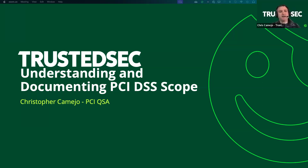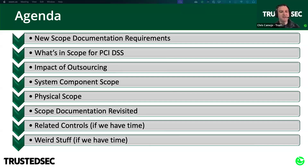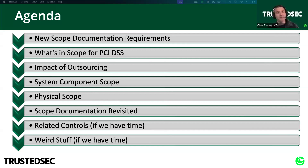Today we're going to talk about a new requirement in PCI 4.0 about documenting scope. There's the requirement itself, and then there's the deep dive into one of the big things we run into as QSAs: people who think they have their scope right, but don't actually understand PCI's arcane rules for scoping.